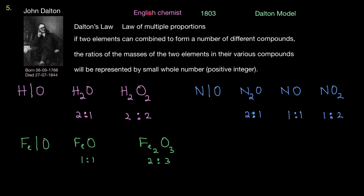The fifth one we're going to look at is John Dalton, an English chemist in 1803. This is called Dalton's model of atom. Dalton's law, the law of multiple proportions, states that if two elements can combine to form a number of different compounds, the ratio of the masses of the two elements in their various compounds will be represented by a small whole number, a positive integer. For instance, if you've got two elements, hydrogen and oxygen, combining together to form water, and the ratio of those two elements in water is 2 to 1, whole number. Like in hydrogen peroxide here, the ratio is 2 to 2, which is 1 to 1. In nitrogen and oxygen here, you form N2O, the ratio is 2 to 1. NO, the ratio is 1 to 1. NO2, the ratio is 1 to 2. So we can see a whole positive integer here.